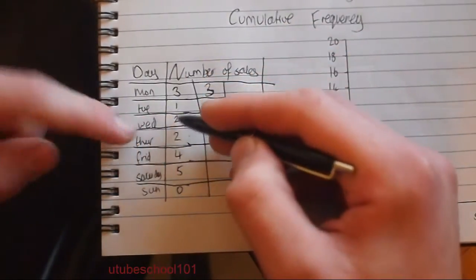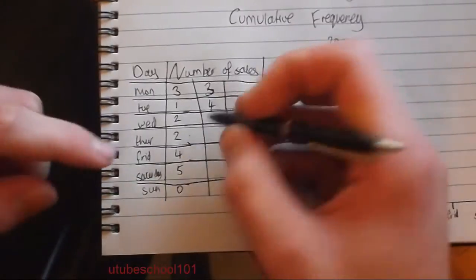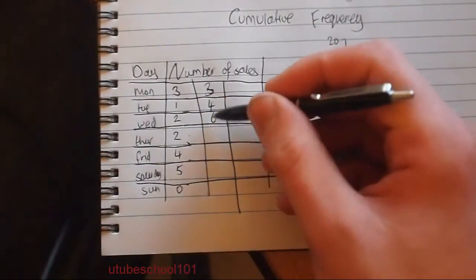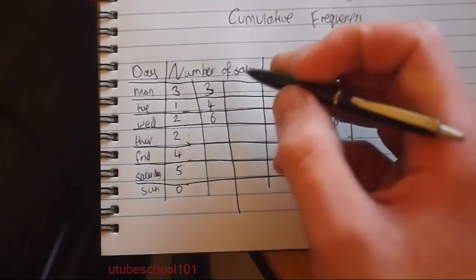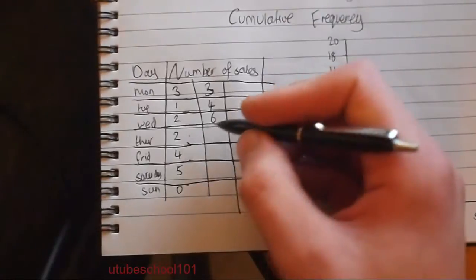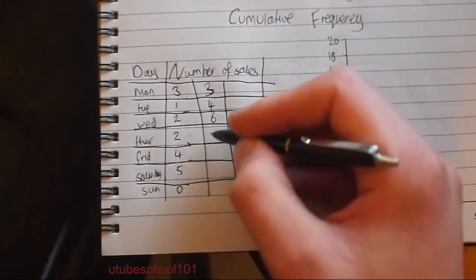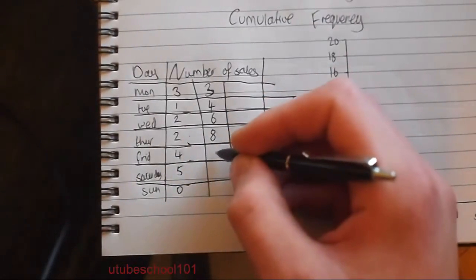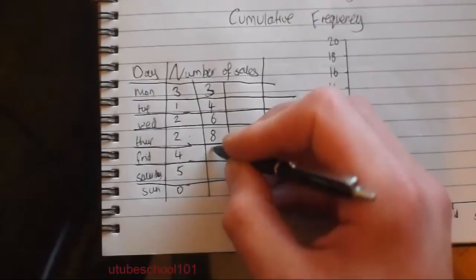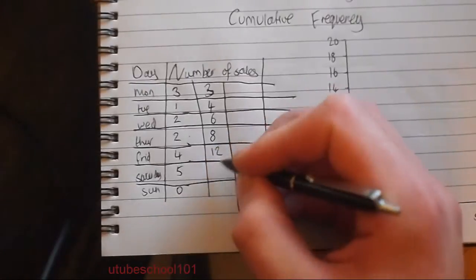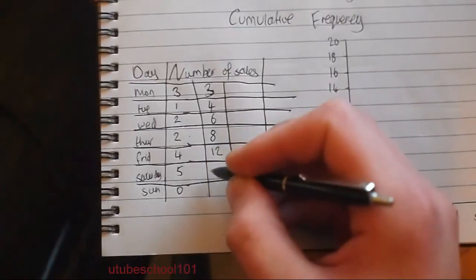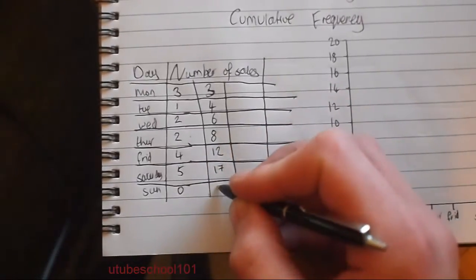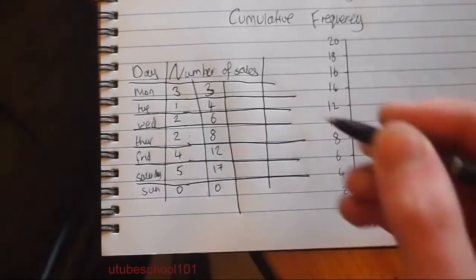What's 3 add 1 add 2? Well, that's 6. So as you can see, we're just adding the previous Cumulative Frequency. 6 add 2, that's 8. 8 add 4, that's 12. 12 add 5, that's 17.